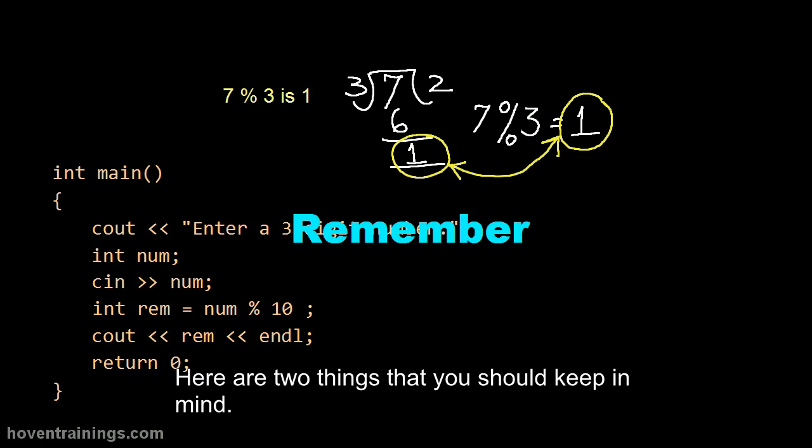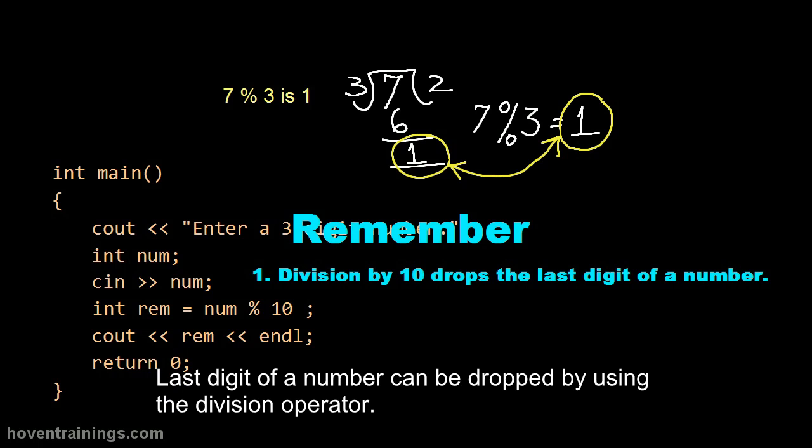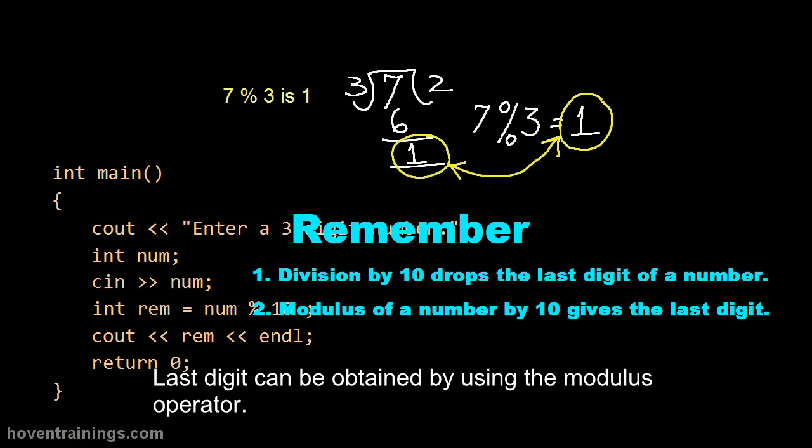Here are two things that you should keep in mind. Last digit of a number can be dropped by using the division operator. Last digit can be obtained by using the modulus operator.